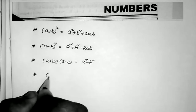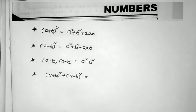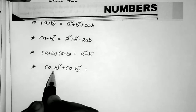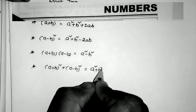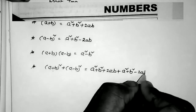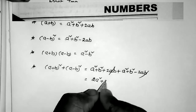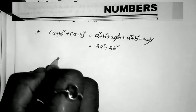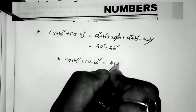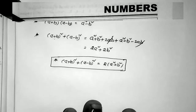Next, what is the value of (a + b)² + (a − b)²? Adding the two formulas: (a² + b² + 2ab) + (a² + b² − 2ab) = 2a² + 2b². Therefore: (a + b)² + (a − b)² = 2(a² + b²). This is a most important, most frequently used formula in competitive examinations.